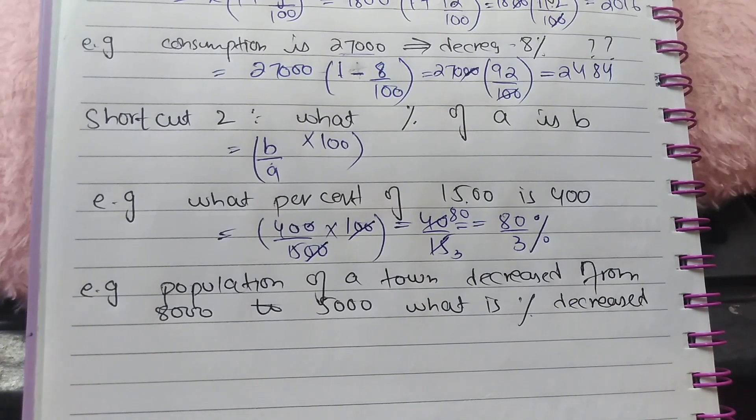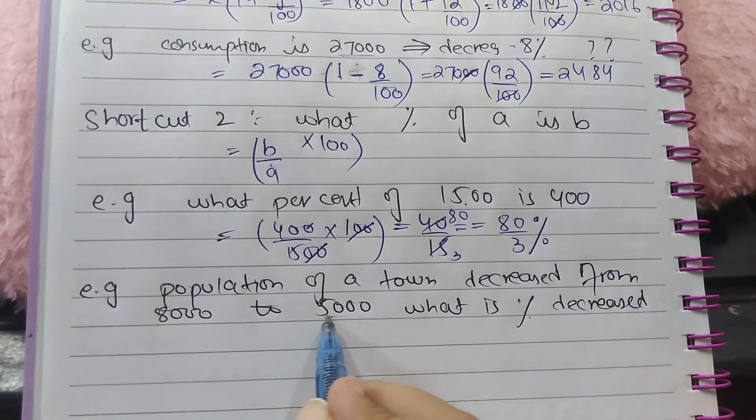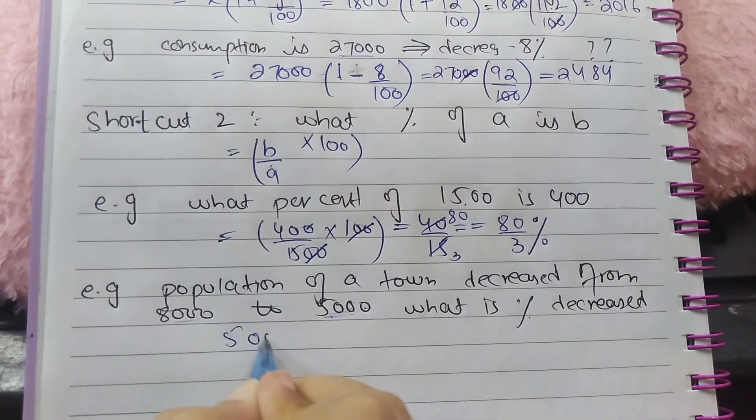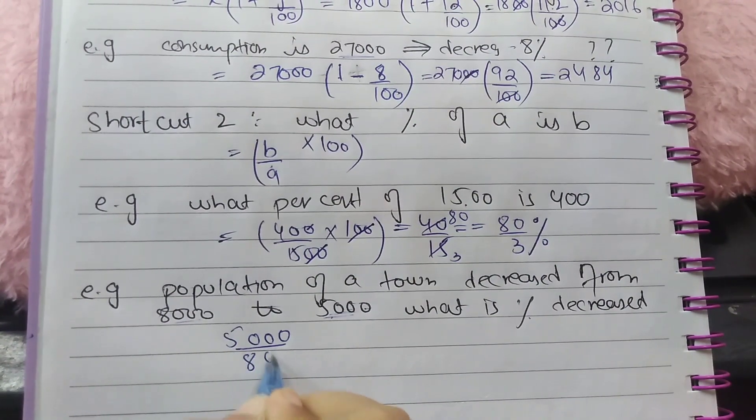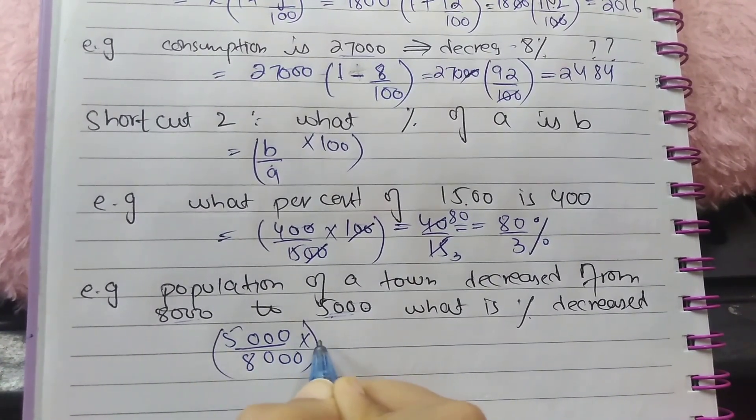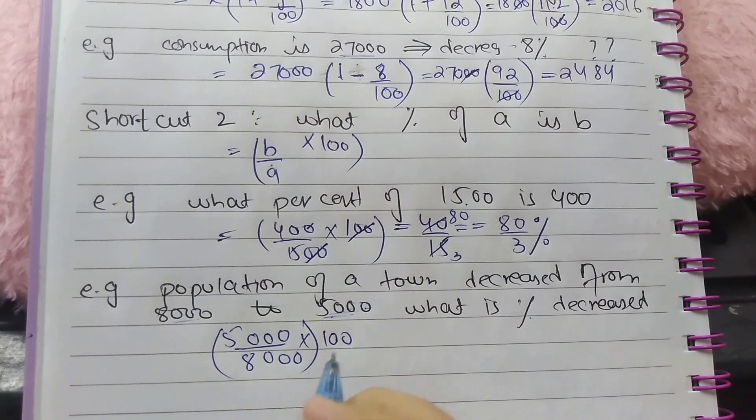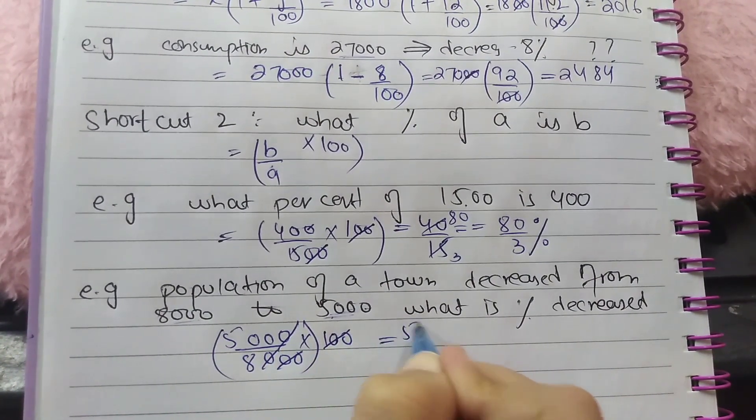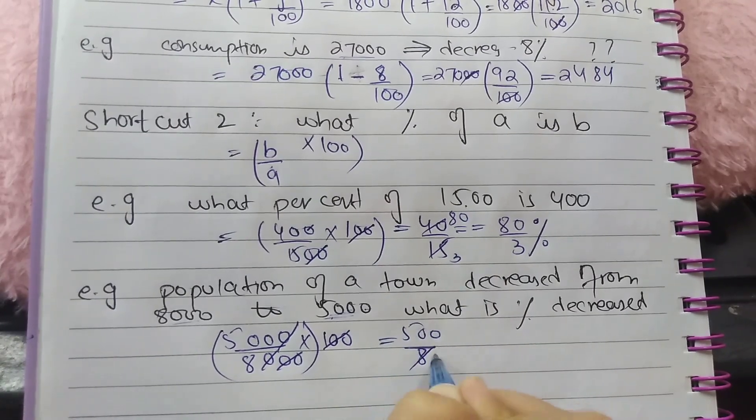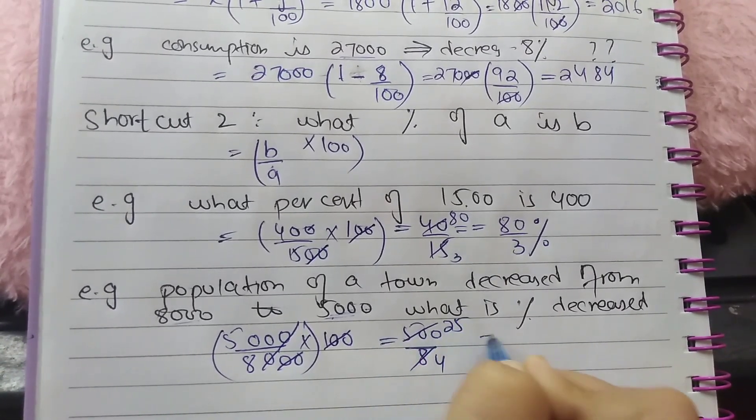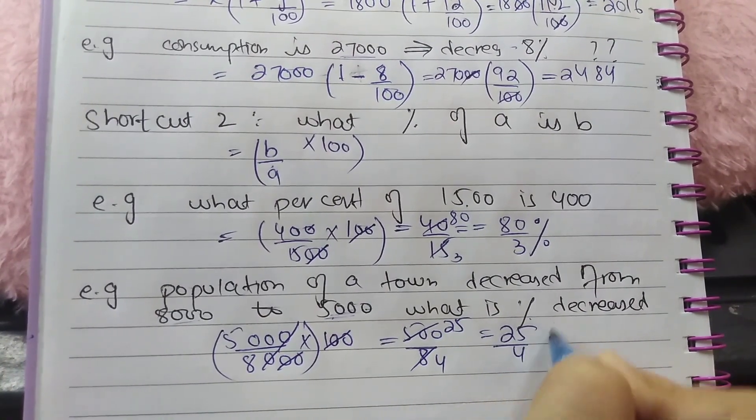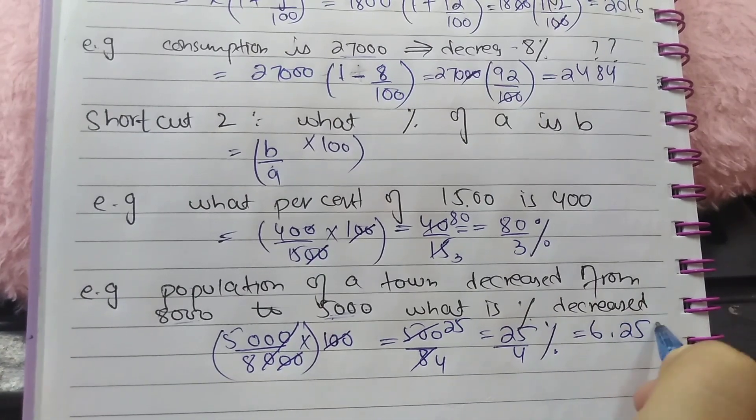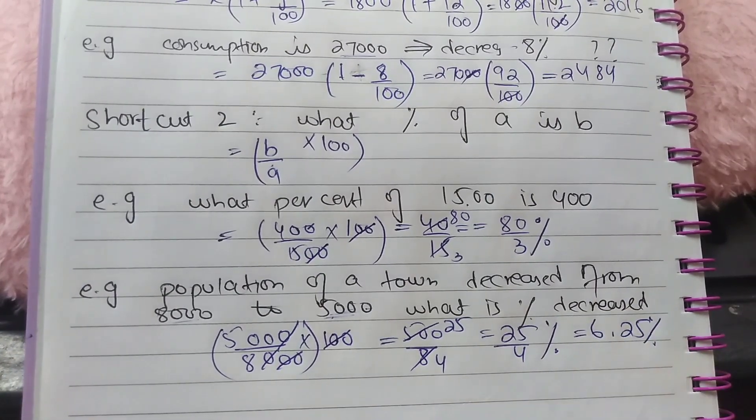So B by A into 100. By cancelling zeros, 500 by 8, or 800 by 8, 5 by 8, which is 25 by 4 percent is the answer. So you can reduce it as mixed fraction 6.25 percent.